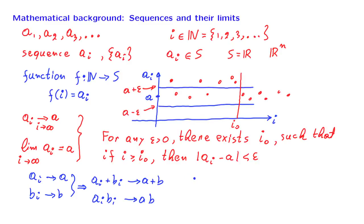And if in addition g is a continuous function, then g of a_i will converge to g of a. So for example, if the a_i's converge to a, then the sequence a_i squared is going to converge to a squared.